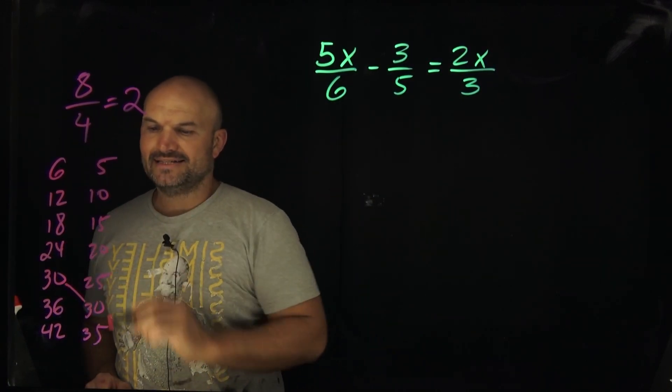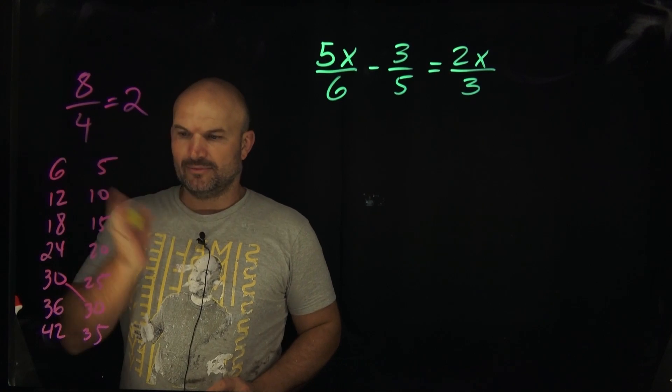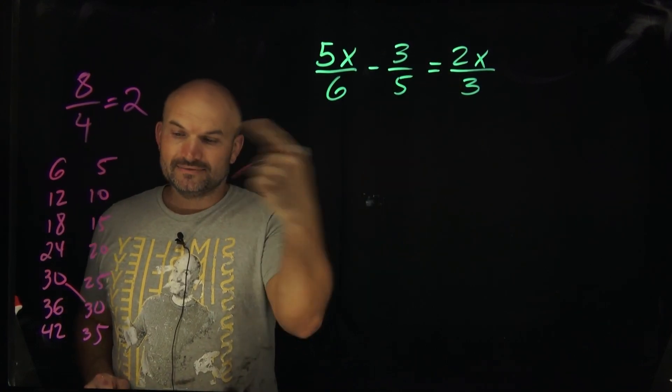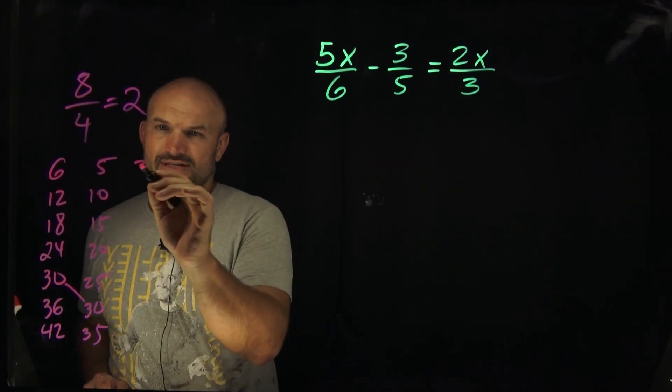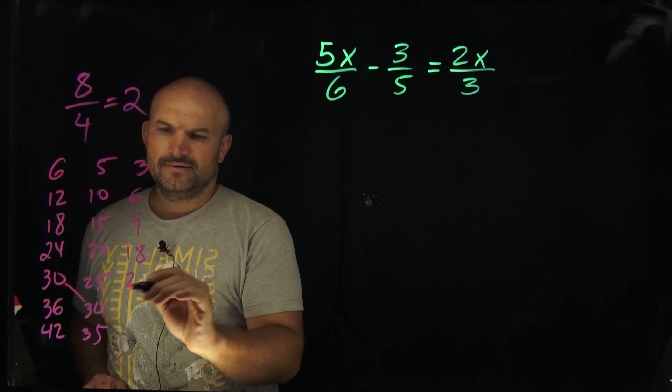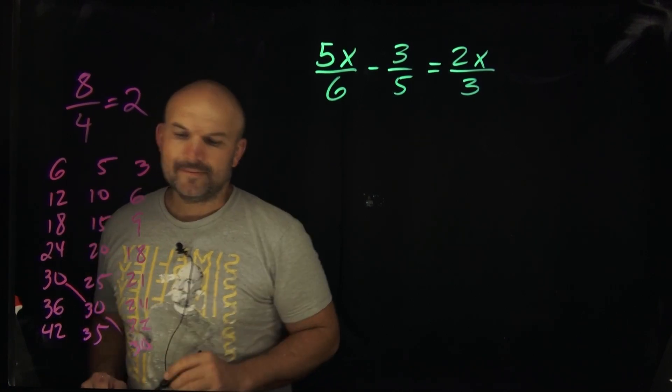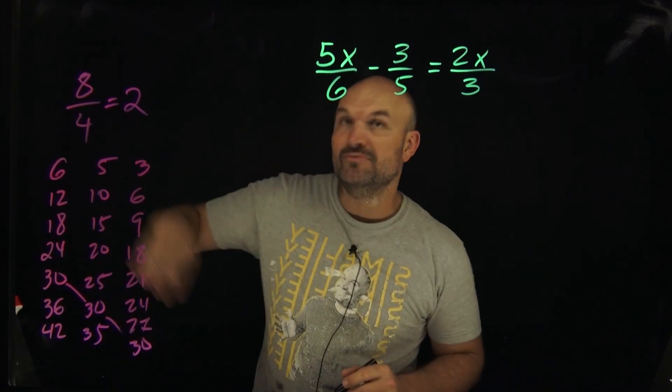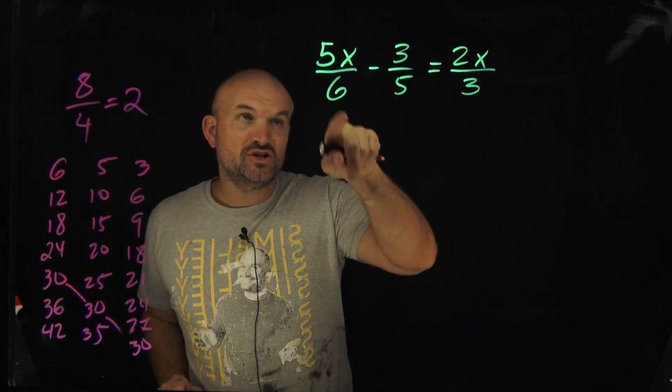So immediately I see 30 as a common number, right? There's no other numbers that are in common. Now does three go into 30? Yes, of course it does. Right. Three, six, nine. Voila. So 30 is the smallest number that is a multiple of these two numbers.